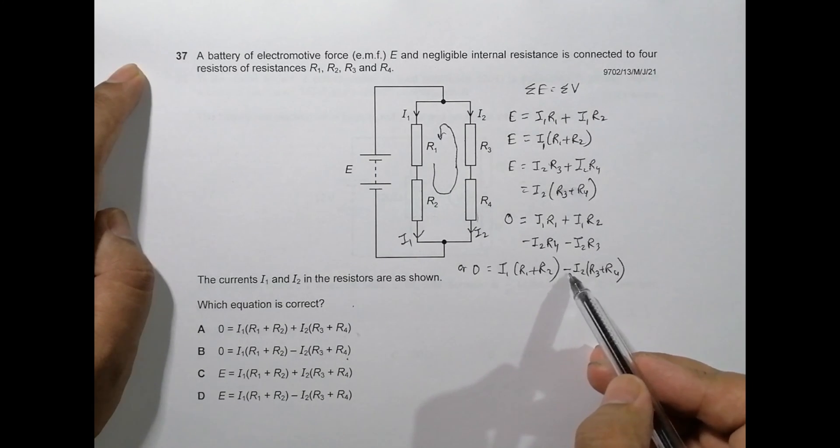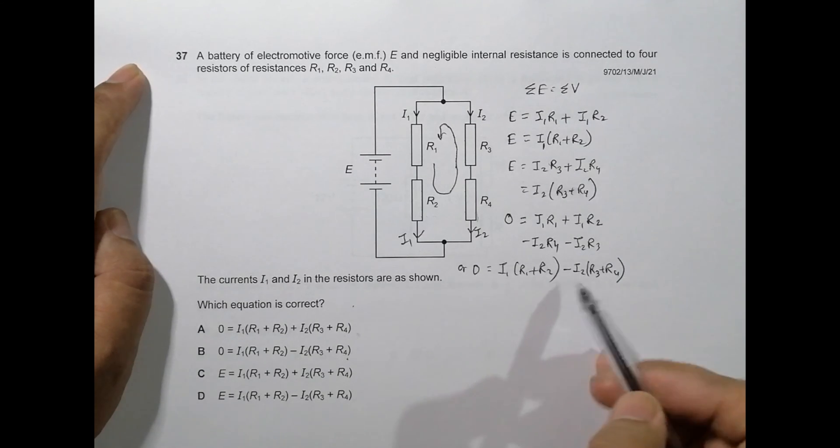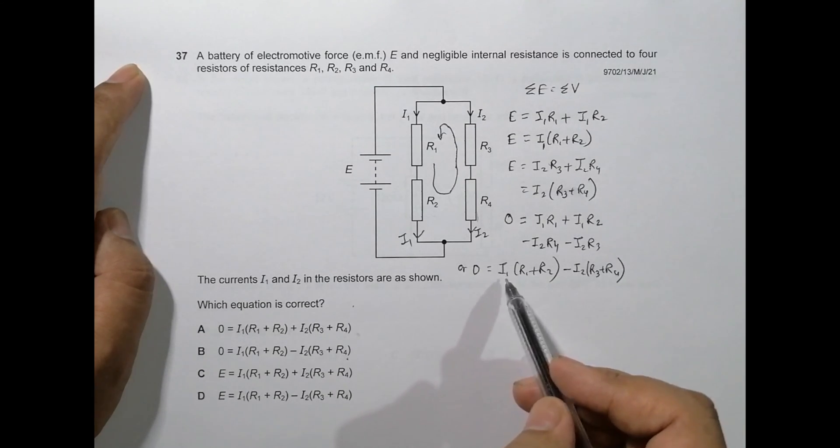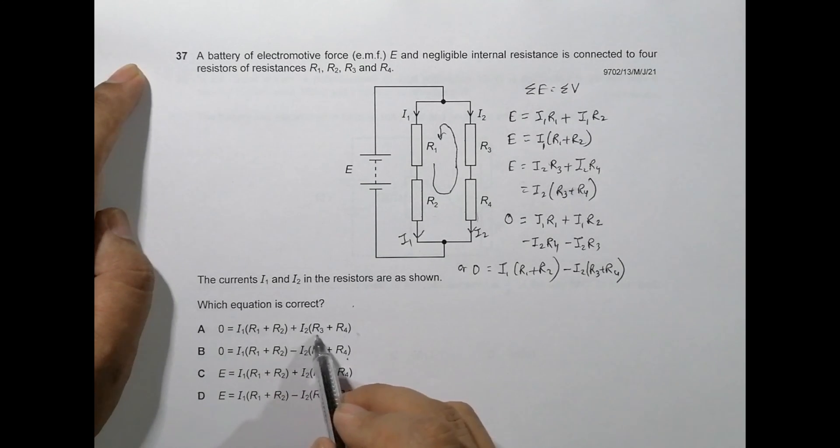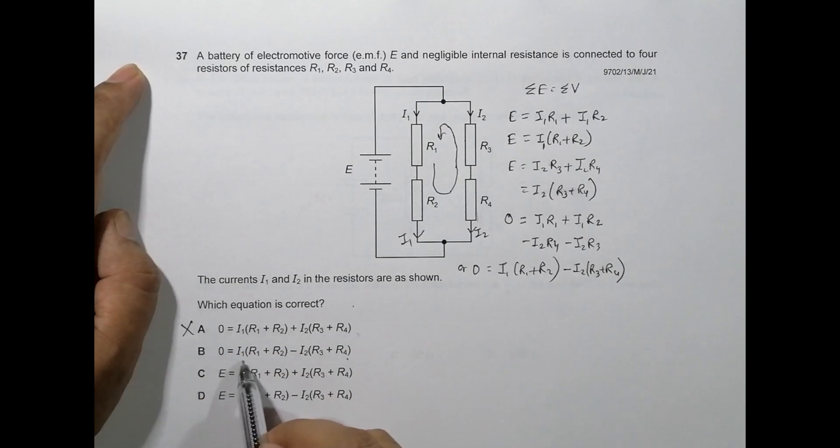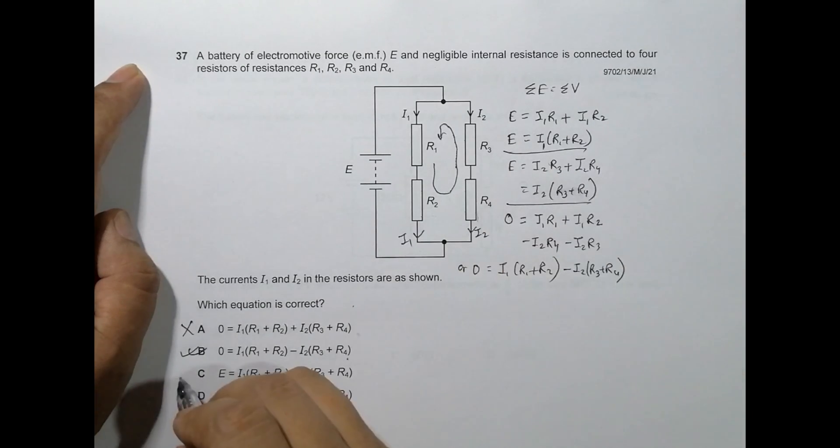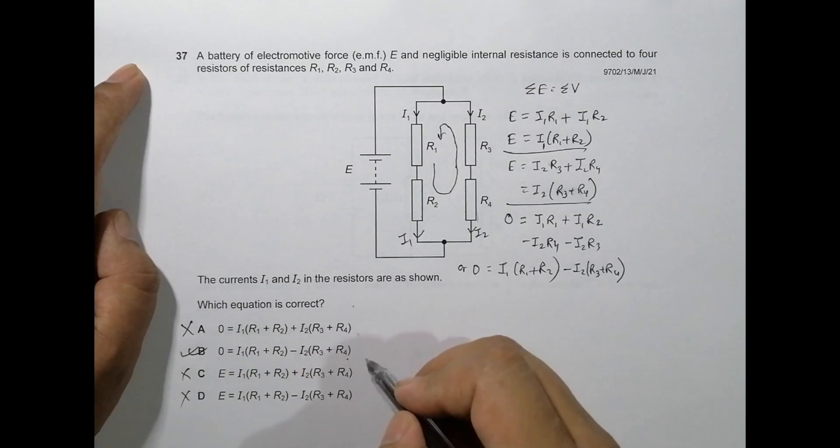So if I go through it, we can see that zero equals I1(R1 + R2) plus I2(R3 + R4) - this is incorrect. Here we have zero equals I1(R1 + R2) minus I2(R3 + R4) - yes, this is correct. The others are equations we cannot have because both of these things are impossible. So that's why choice B should be the correct choice.